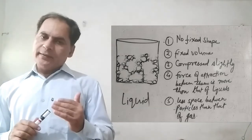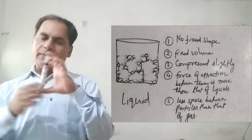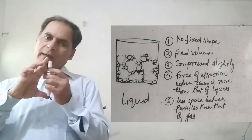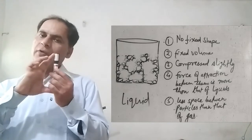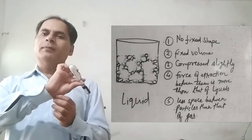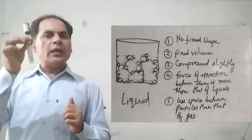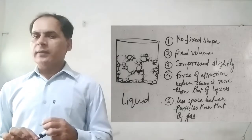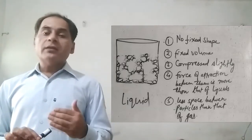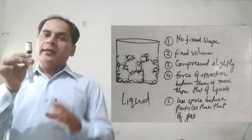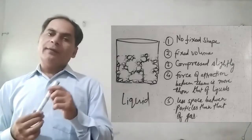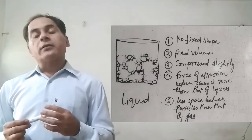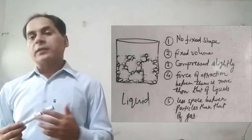The volume of the liquid state is fixed. If we fill water — water is a liquid — in a container, it will occupy a certain volume. If we pour the same water into another container, it will occupy the same volume, say 10 ml. Because volume is fixed. But the shape is not fixed, because liquid takes the shape of its container — if poured into a glass, it will occupy the shape of the glass. So the shape of liquid is not fixed, but the volume is fixed.